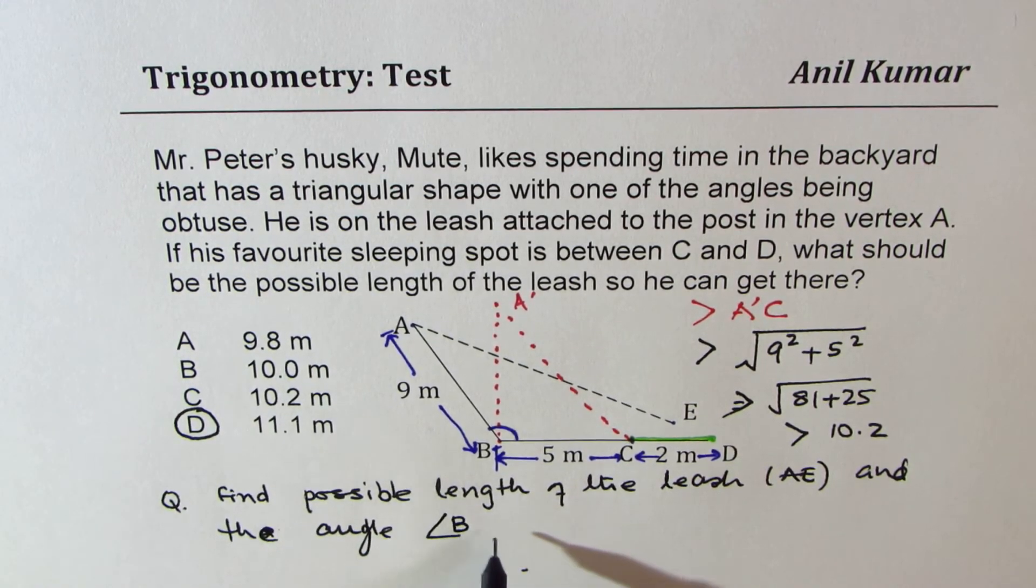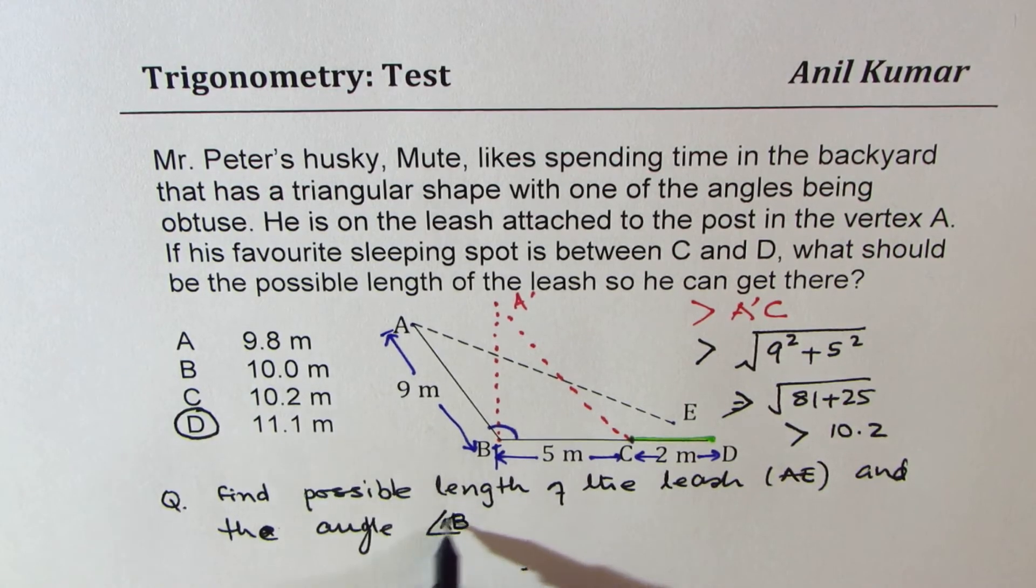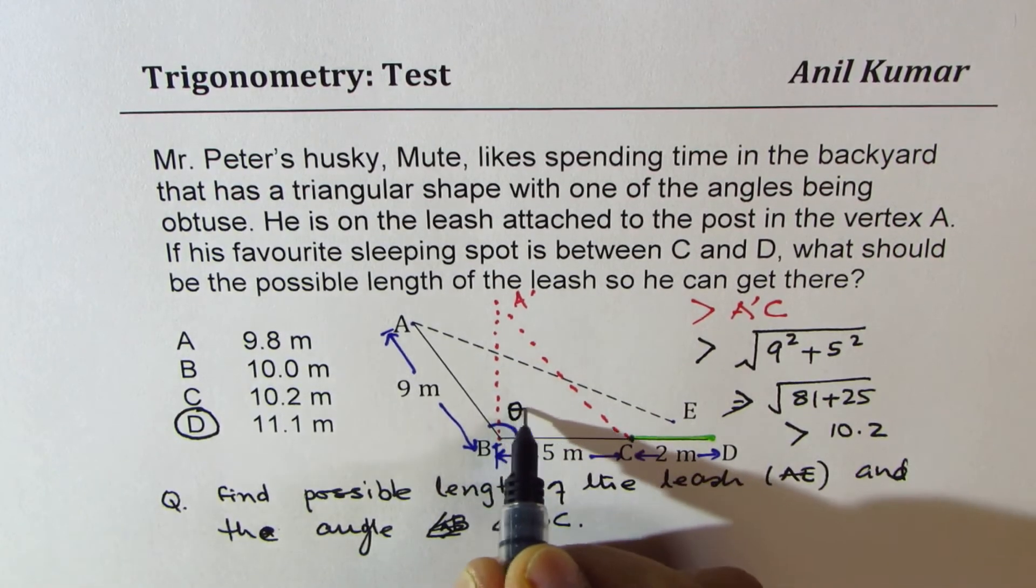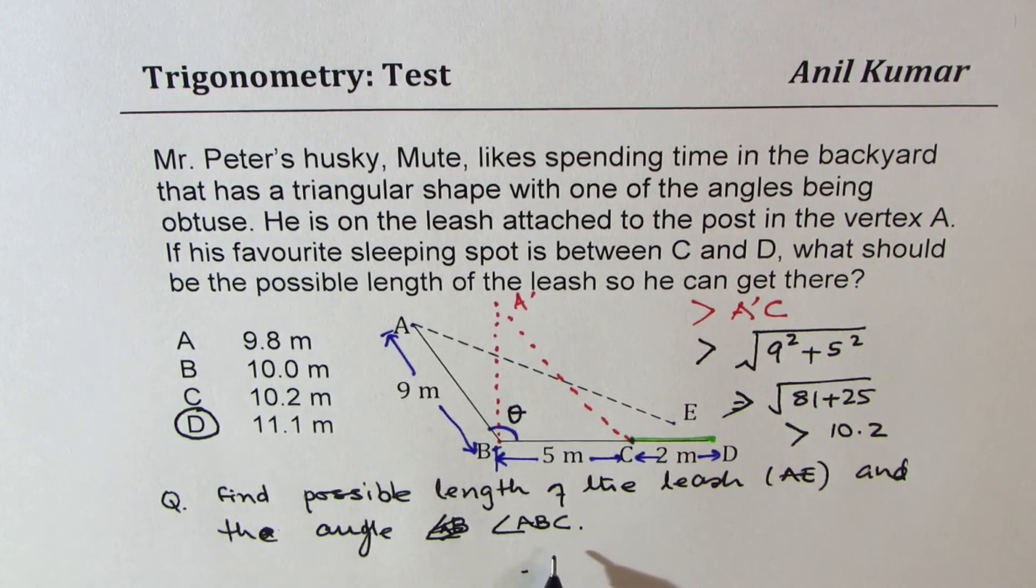And the angle, angle ABC. So the obtuse angle, let's call this theta. So let this be the question for you now.